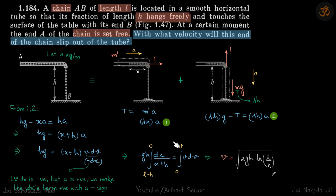Now we just integrate. The limits of x: initially the total length is L, so this part of the chain initially was total length L minus h, and finally it is zero when it just comes out of the tube. That is the limit of x. Limits of velocity will be of course zero to v. Solving it, you'll get your answer. This is the velocity when it will just come out of the tube.